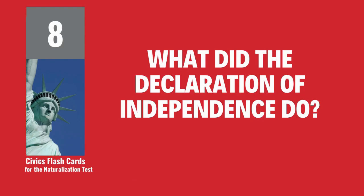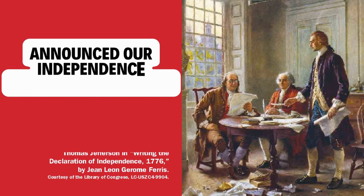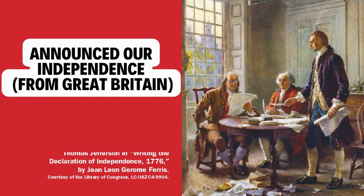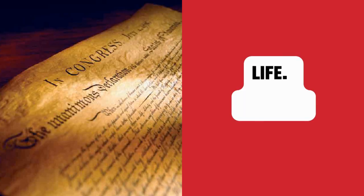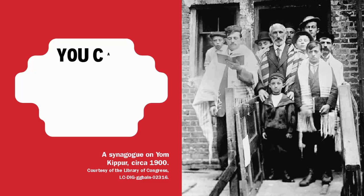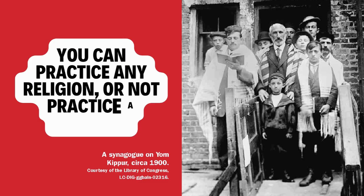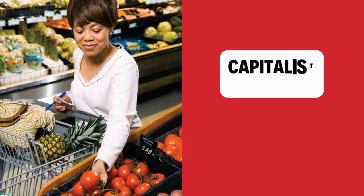What did the Declaration of Independence do? Announced our independence from Great Britain. What are two rights in the Declaration of Independence? Life. Liberty. What is freedom of religion? You can practice any religion or not practice a religion. What is the economic system in the United States? Capitalist economy.